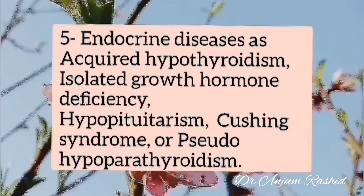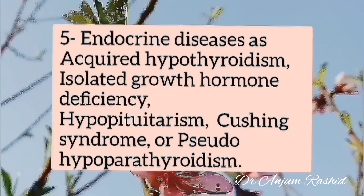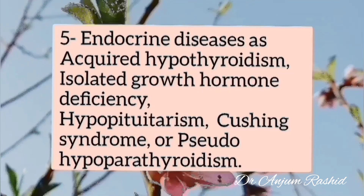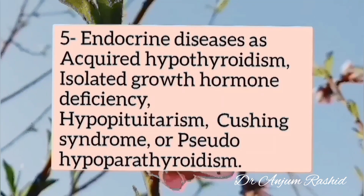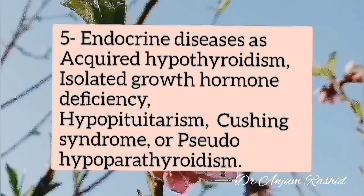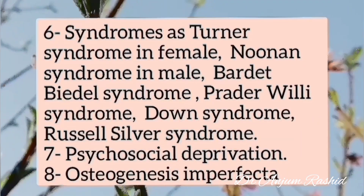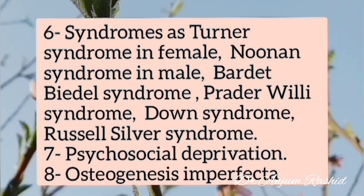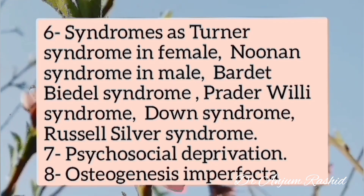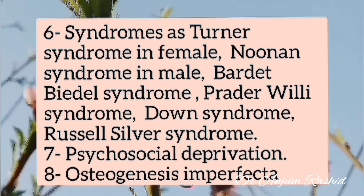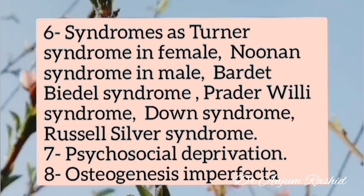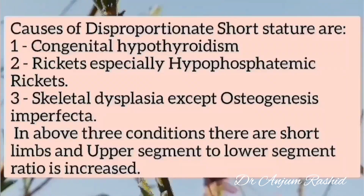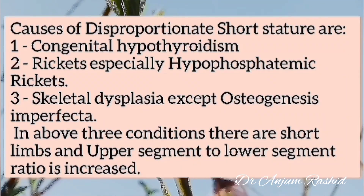Number five, endocrine diseases such as acquired hypothyroidism, isolated growth hormone deficiency, hypopituitarism, Cushing syndrome, or pseudohypoparathyroidism. Number six, syndromes such as Turner syndrome in females, Noonan syndrome in males, Bardet-Biedl syndrome, Prader-Willi syndrome, Down syndrome, or Russell-Silver syndrome. Number seven, psychosocial deprivation. And number eight, osteogenesis imperfecta.